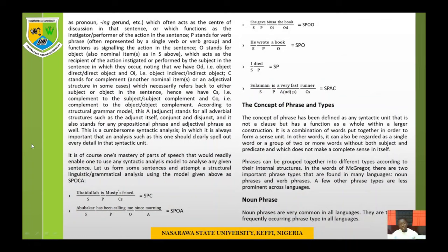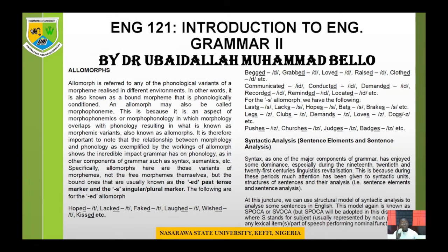S stands for subject, P stands for predicate, O stands for object, C stands for complement, while A stands for adjunct. We are not saying every sentence must have all these elements. There are two major elements every sentence is supposed to have: S and P, or S and V. Any other element — O (object), C (complement), and A (adjunct) — are optional, depending on what the speaker or writer intends to express.